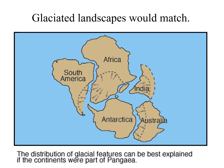Number four: glaciated landscapes. Evidence that landscapes were glaciated — if you put all the lands together, this evidence matched up and it looked like one enormous glacier covering parts of all these lands. So the four pieces of evidence were: puzzle piece fit, rock types and tectonic structures would match, fossil ranges would overlap, and glaciated landscapes would match. There was pretty good evidence that Wegener had.